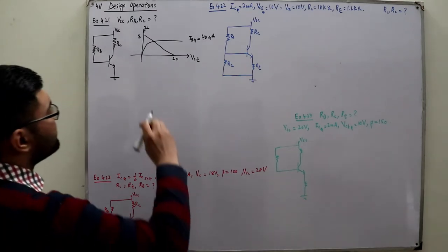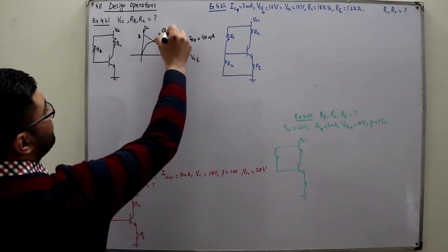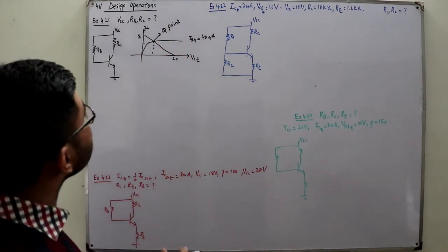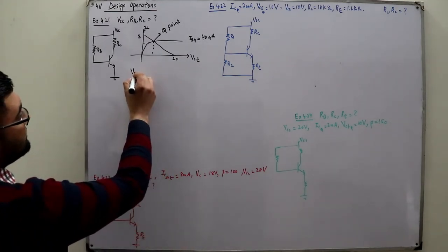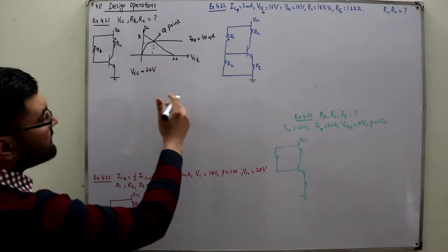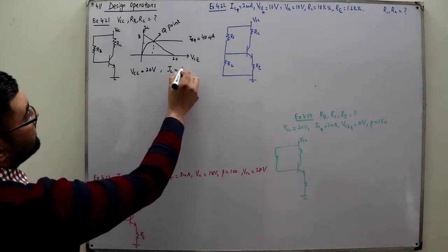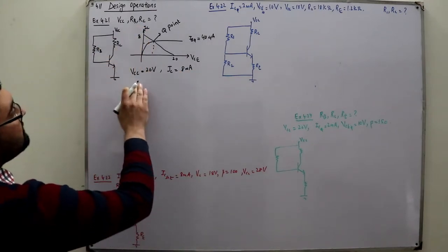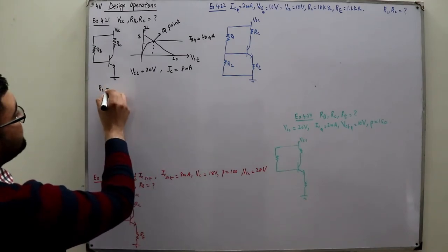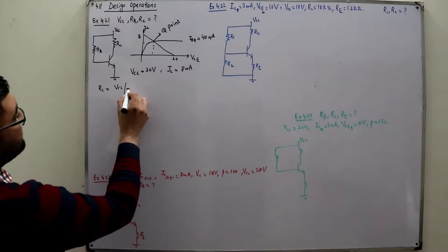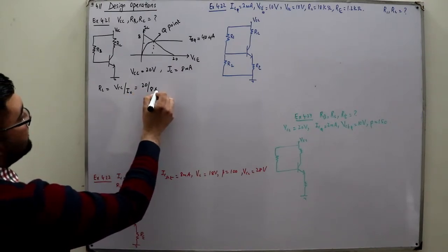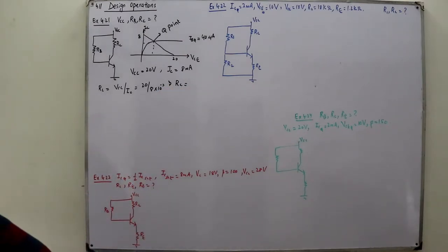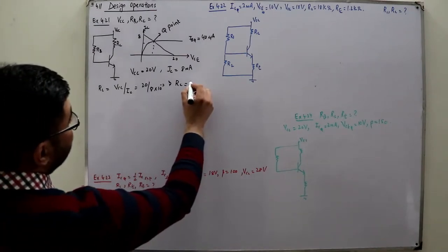The Q point is given. VCC from here is 20 volts and IC is 8 milliamperes. RC is one of the unknown terms, so RC would be VCC upon IC — that is 20 divided by 8 milli. RC comes out to be 2.5 kilo ohms.